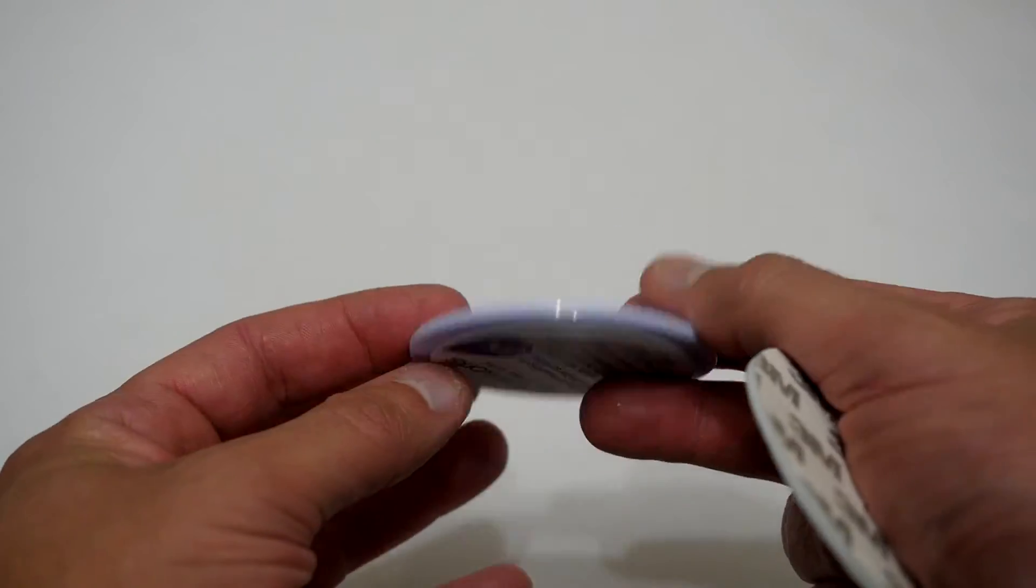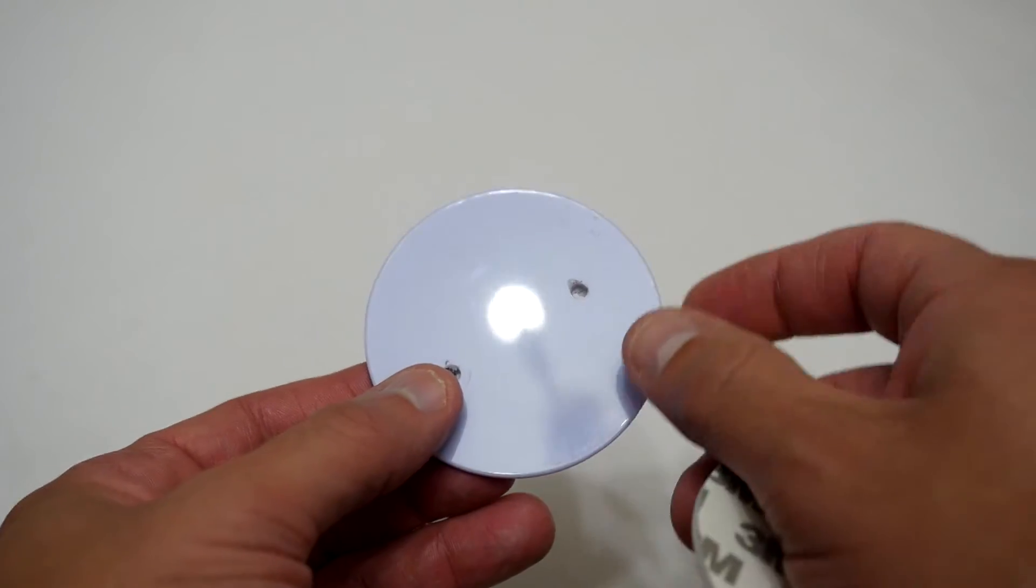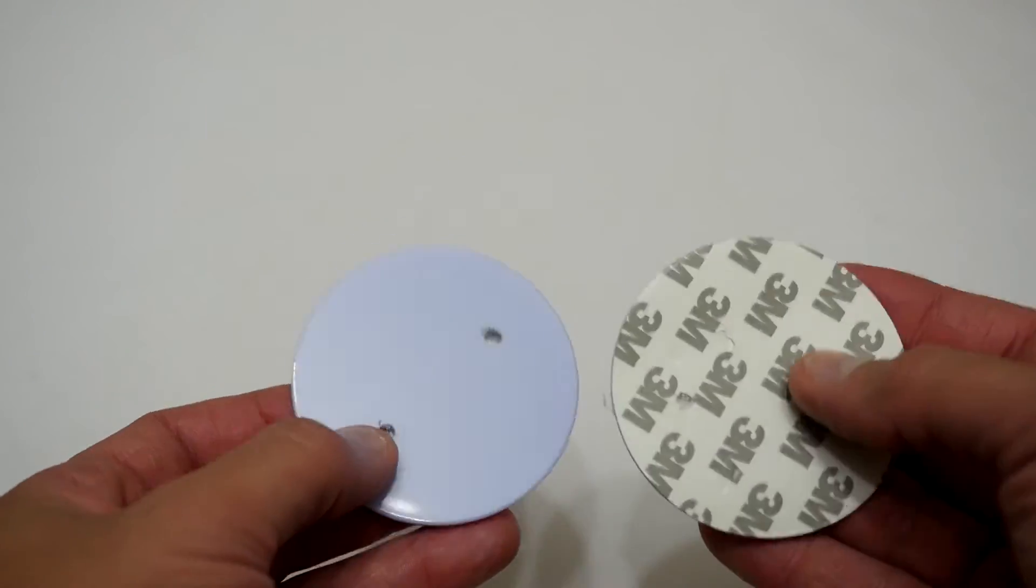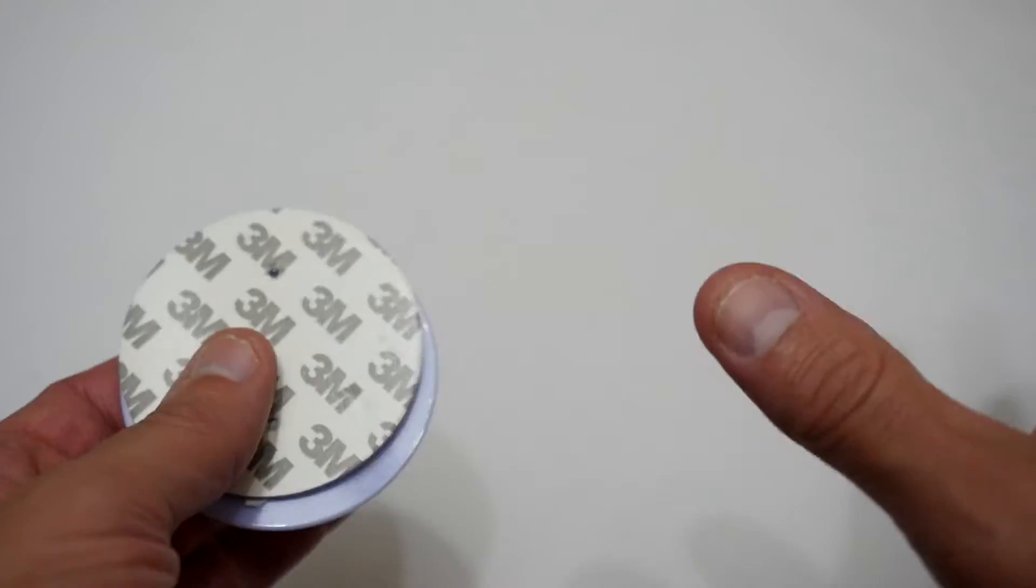It's something to watch out for that the included adhesive back is okay for certain materials but if you're going to put it on something that's quite strong and you don't want it easily ripped off I would recommend looking in your hardware store for something like this. Anyway let's go and install this doorbell and I'll show you it operating.